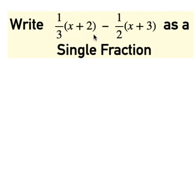Write 1 over 3 times (x + 2) minus 1 over 2 times (x + 3) as a single fraction. We can express this as (x + 2) over 3 minus (x + 3) over 2.